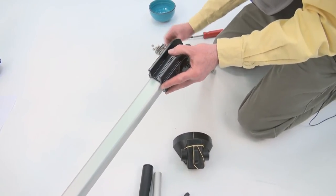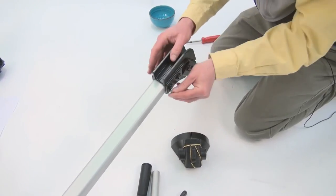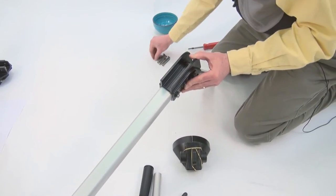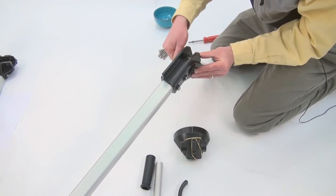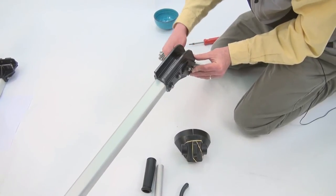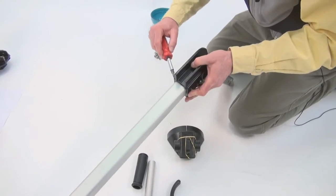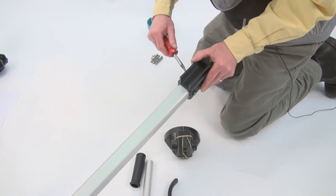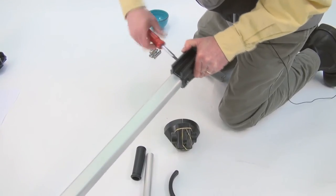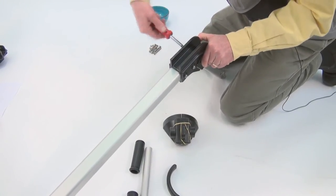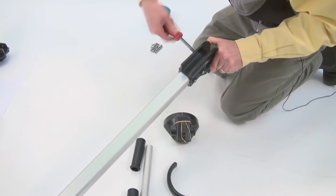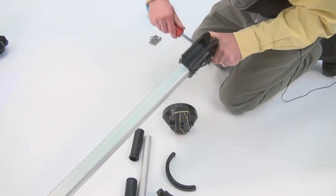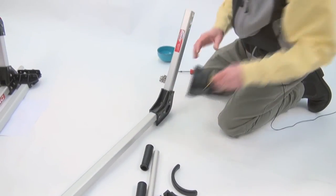And we're going to put it that way. Now we're going to take our screws. Put four in. Okay. Next is going to be the bow support.